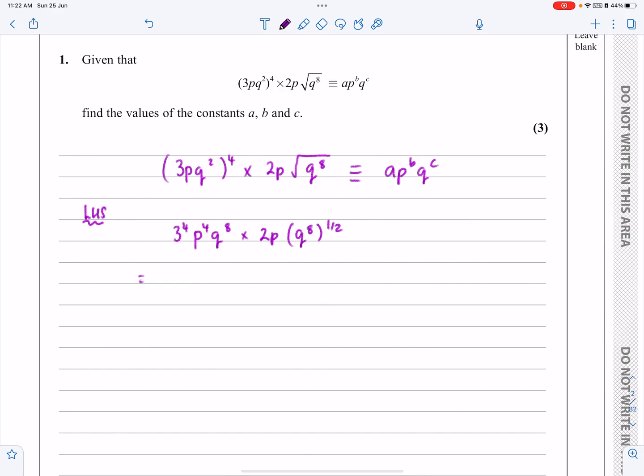Right, that then works out to be, well, 3⁴ is 81p⁴q⁸, and then we've got times 2p, and this particular index law says to multiply the two powers together, so q⁴.